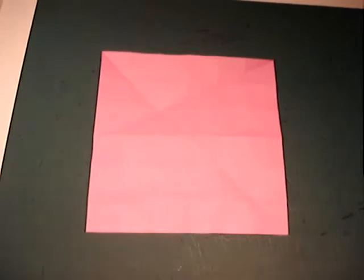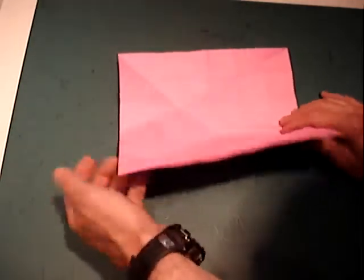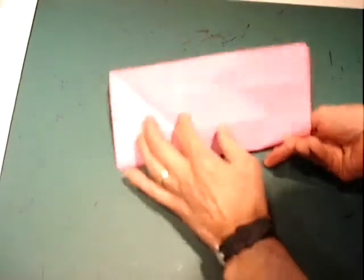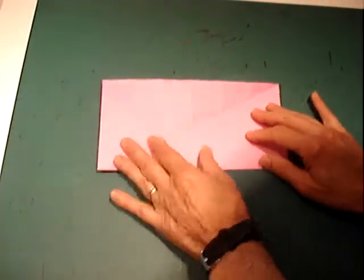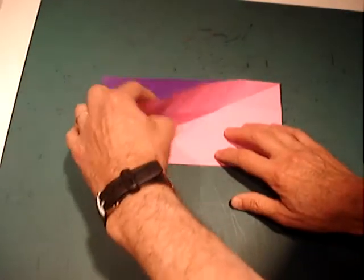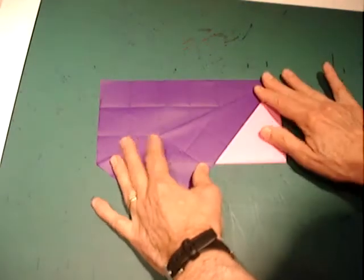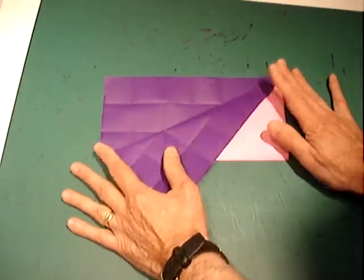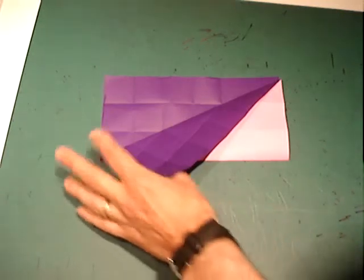This first set of folds divides the square into a 6 by 6 grid of squares. Begin by folding the paper in half horizontally. Fold a diagonal across one half of the paper. Then unfold back to the square.